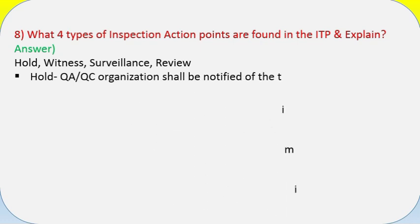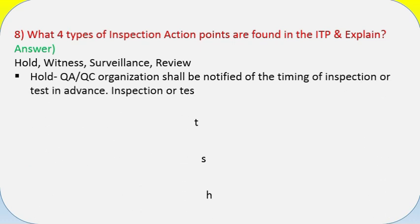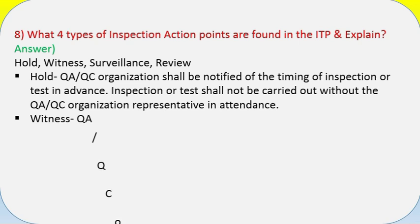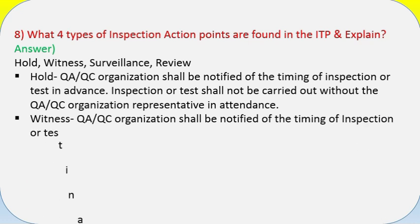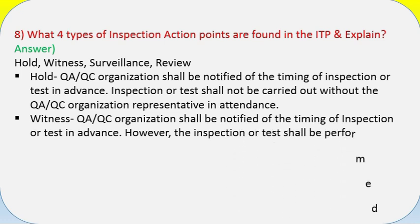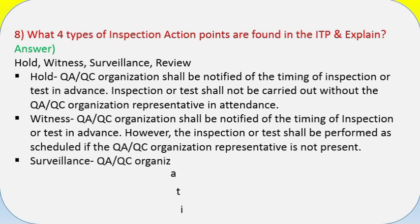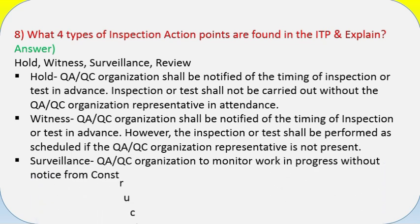Question 8: What four types of inspection action points are found in the ITP? Answer: Hold — QA/QC organization shall be notified in advance; inspection or test shall not be carried out without the QA/QC representative present. Witness — QA/QC organization notified in advance; however, inspection or test shall be performed as scheduled if the representative is not present. Surveillance — QA/QC organization monitors work in progress without notice from construction organization. Review — review and approval of documents.